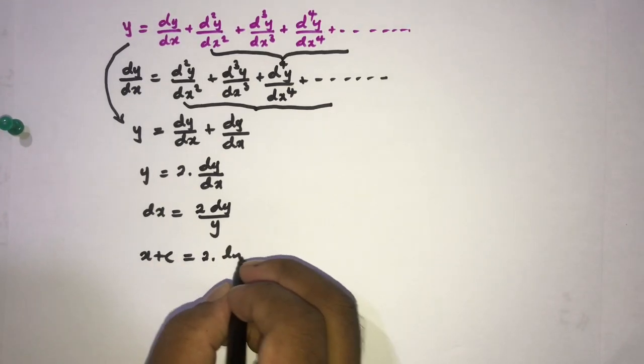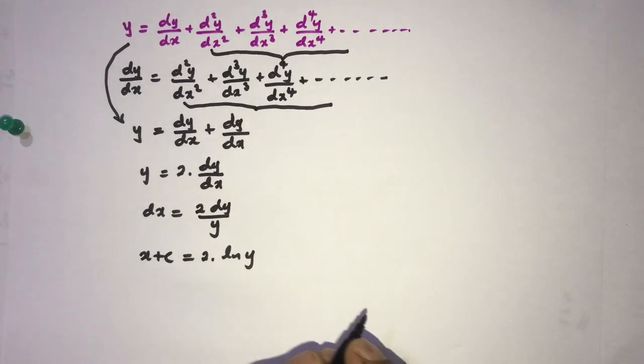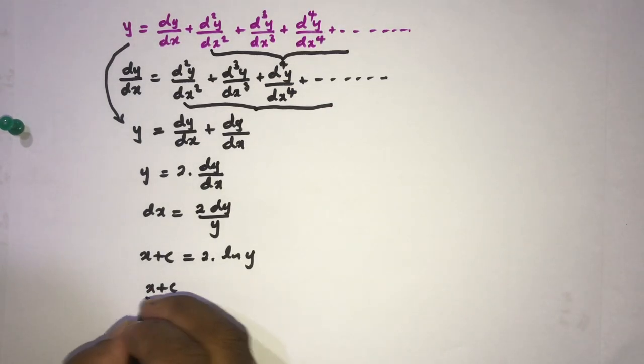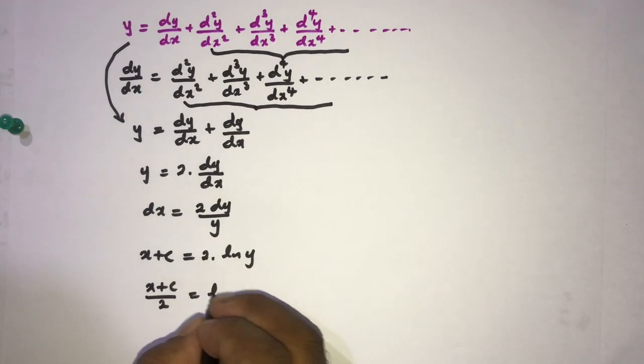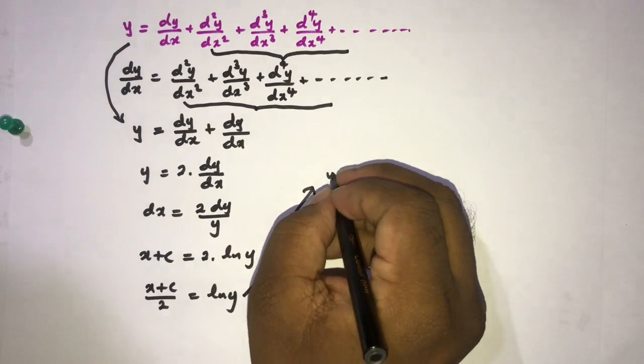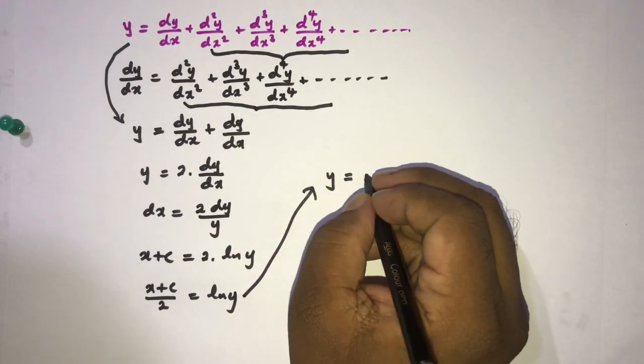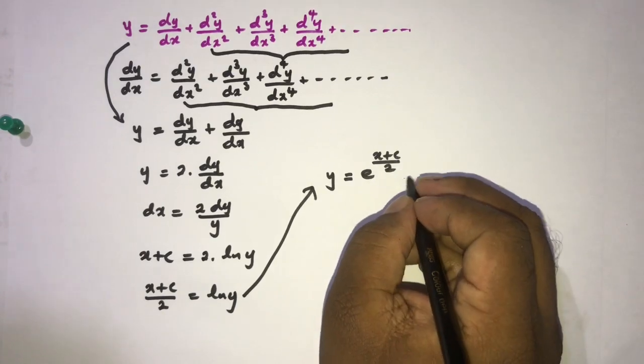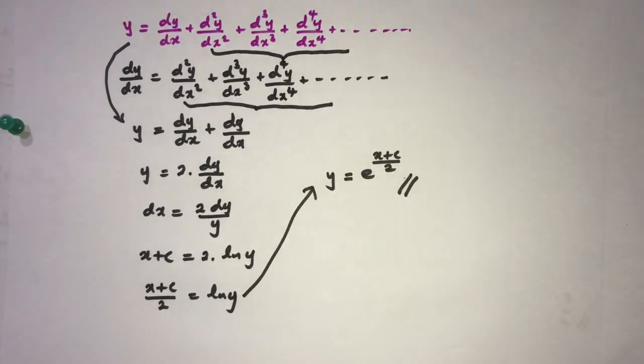Two times natural log of y. Now we know x plus c over 2 is equal to natural log of y, and we know y is equal to e to the x plus c over 2. This is the solution. If you like this video, please subscribe to this channel. Thank you for watching.